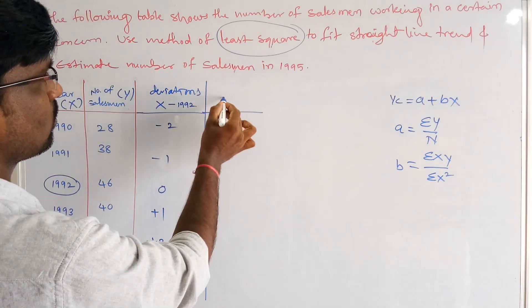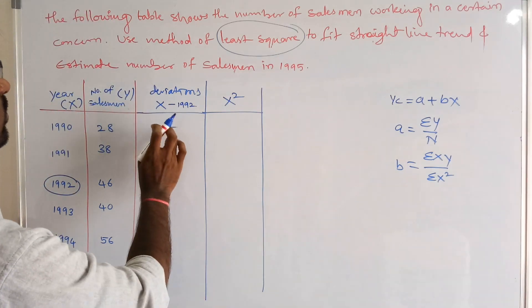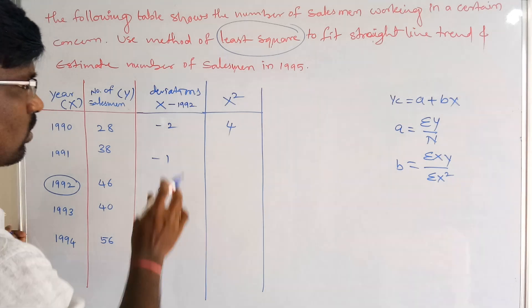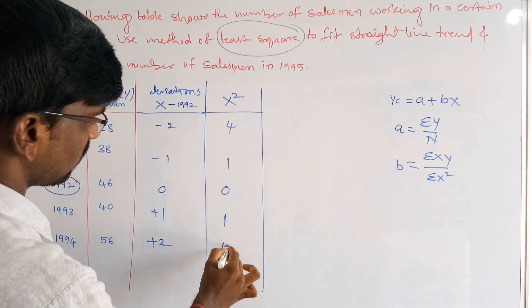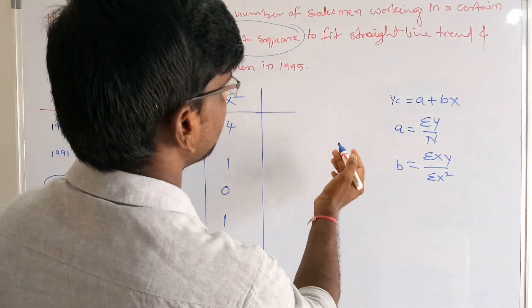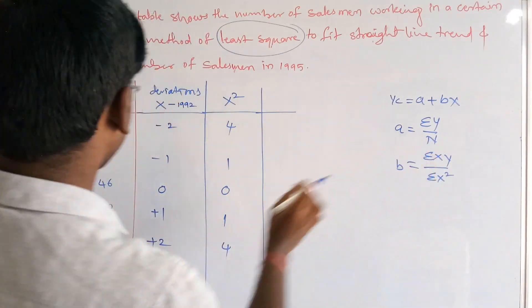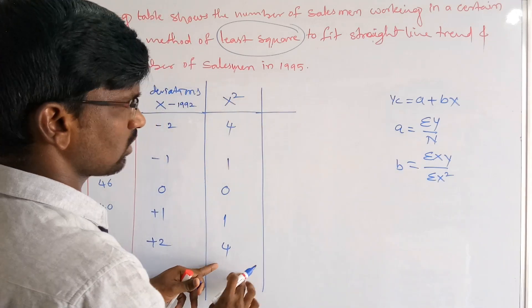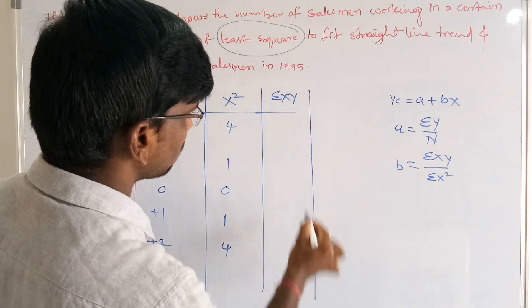From these deviations we find x squared: (-2)² = 4, (-1)² = 1, 0² = 0, 1² = 1, 2² = 4. We also need summation of y, summation of x, summation of xy, and summation of x squared.